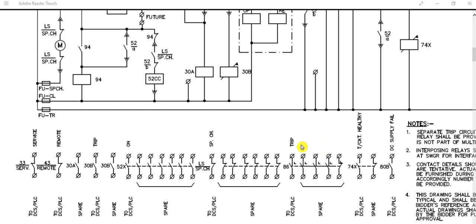In this video I will discuss the balance part. In the previous two videos we have seen how the circuit breaker spring charging mechanism works, how the trip circuit and closing circuit work in detail — how the trip coil and closing coil of the circuit breaker get energized, and also the indication lamps. In this video I will briefly discuss the DCS interface.